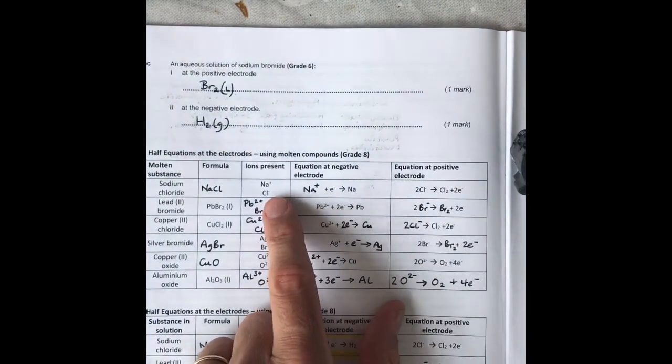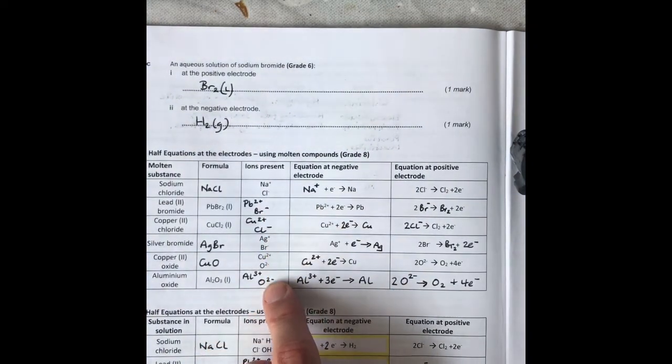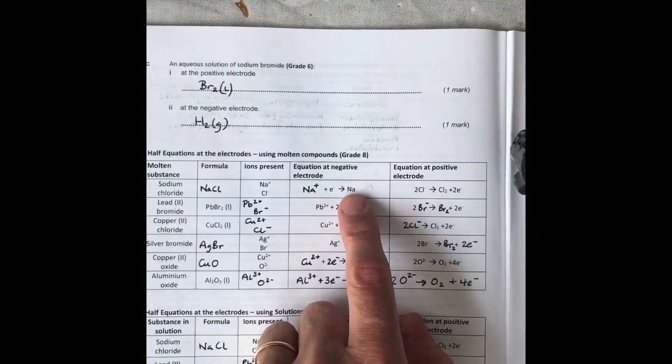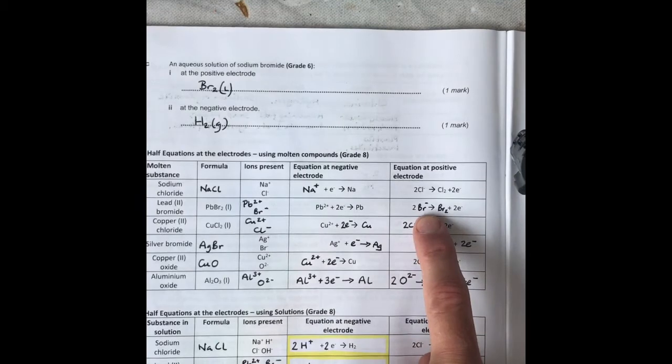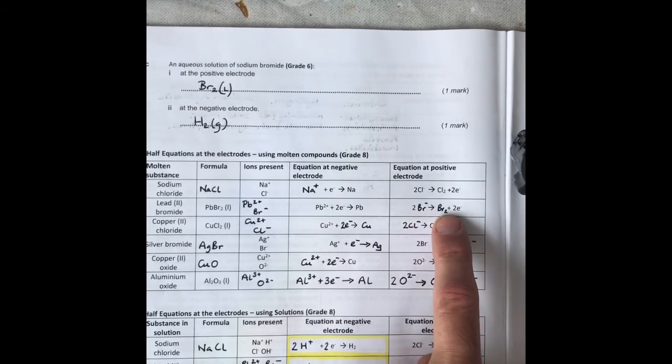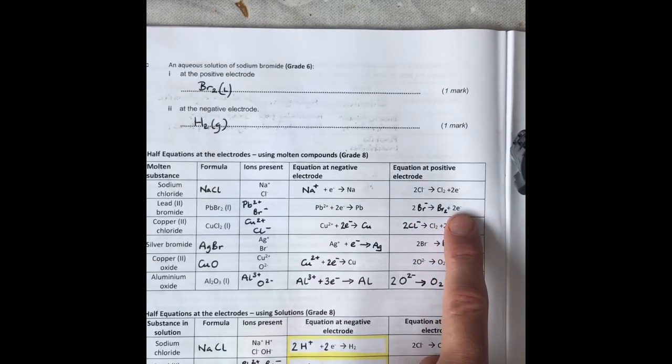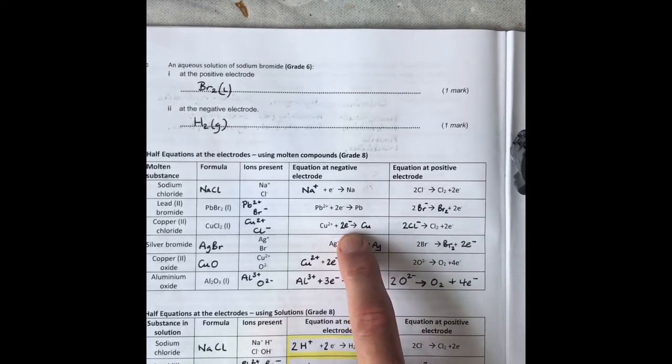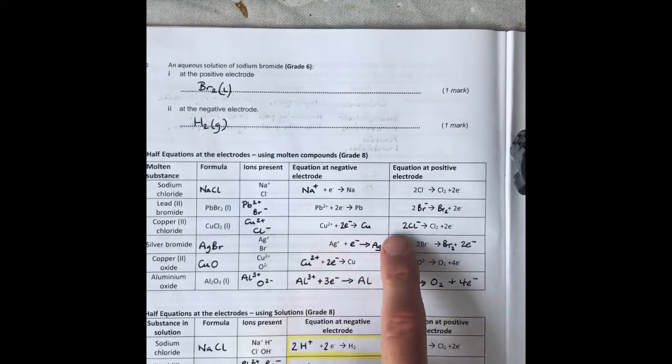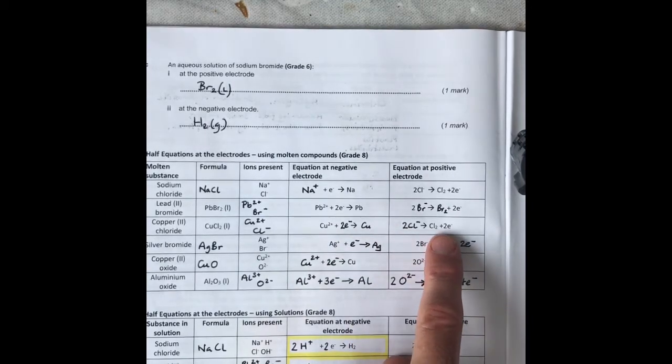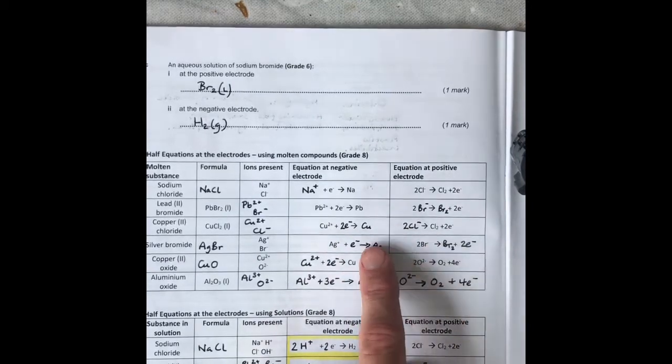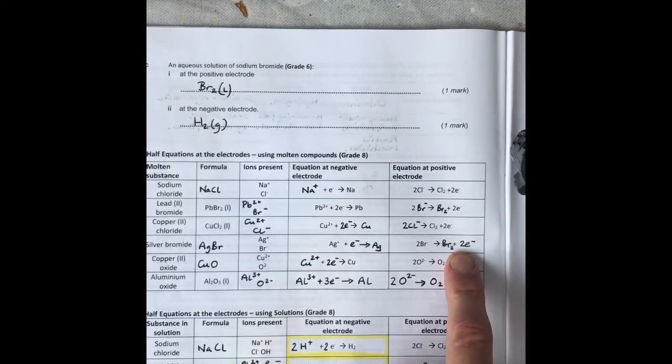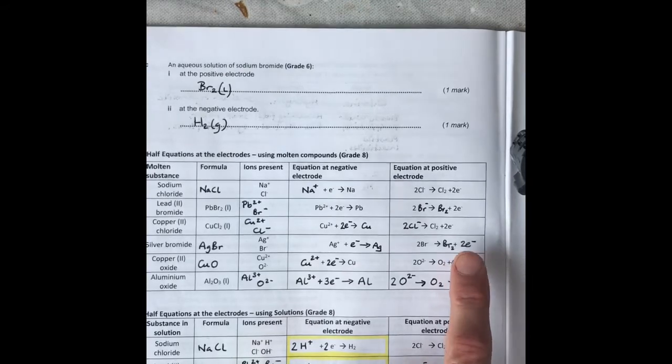In each case: sodium gains an electron, becomes sodium metal. Two bromine ions form bromine liquid and lose two electrons. At the cathode, copper gains two electrons to become copper metal. Chlorine loses two electrons to become chlorine gas. Silver gains an electron to become silver. Bromine becomes bromine liquid and it loses two electrons.